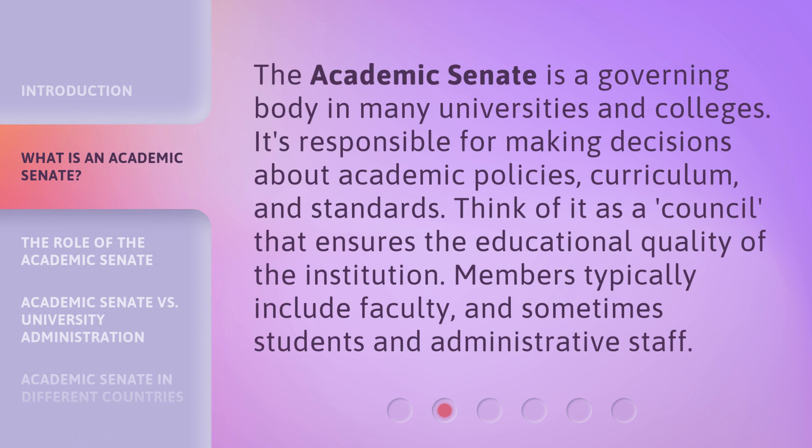The Academic Senate is a governing body in many universities and colleges. It's responsible for making decisions about academic policies, curriculum, and standards. Think of it as a council that ensures the educational quality of the institution. Members typically include faculty and sometimes students and administrative staff.